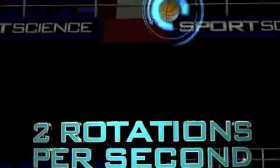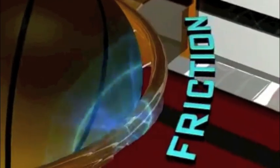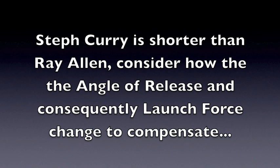Finally, backspin. Allen puts about two hertz, or two rotations per second, on the ball. This helps decelerate the ball when it strikes the backboard or the rim, using friction to shed energy and lose velocity. And a slower ball is more likely to fall for three.